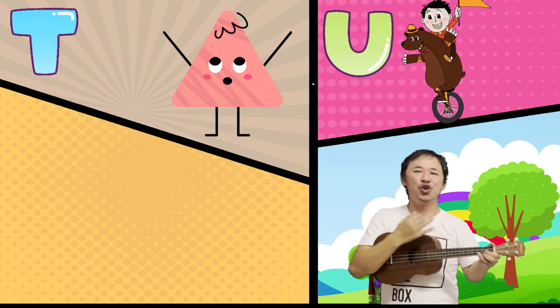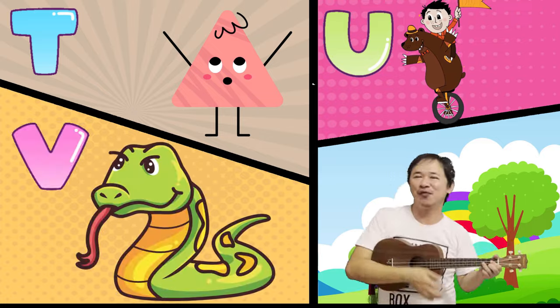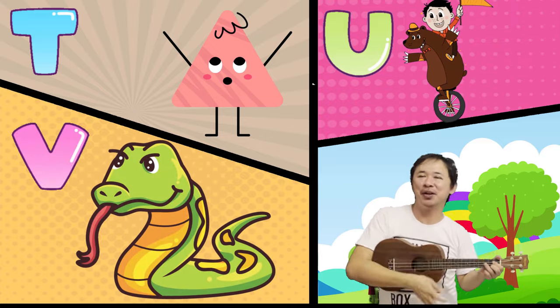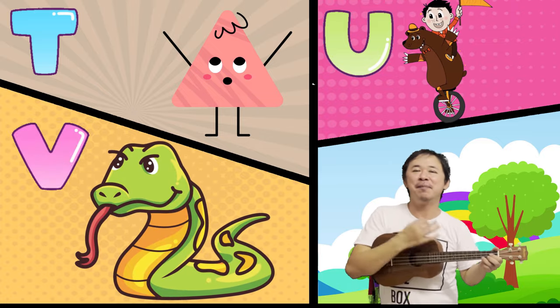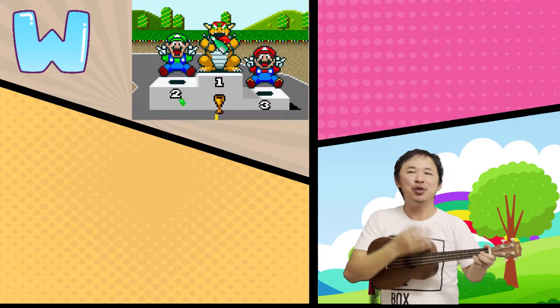U is for Unicycle. U, U, Unicycle. V is for Viper. V, V, Viper.